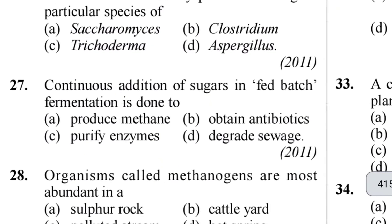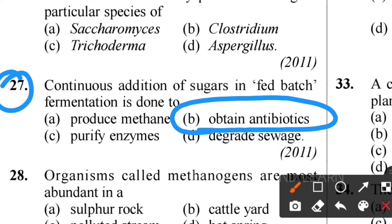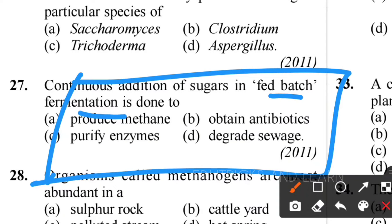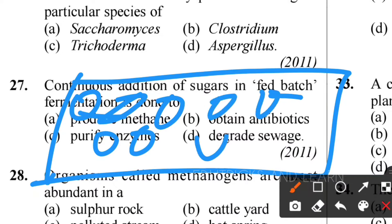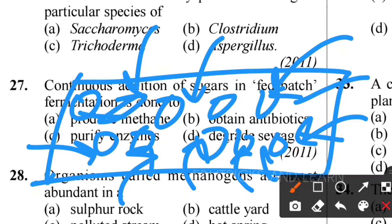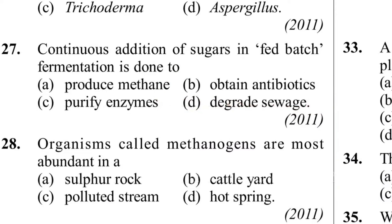Twenty-seventh question: continuous addition of sugars in fed-batch fermentation is done for what purpose? We continuously add sugars in fermentation to obtain antibiotics. Though this may be outside the NCERT book, the correct answer is that sugars are continuously added in the fermenter to obtain antibiotics. Option: we obtain antibiotics.